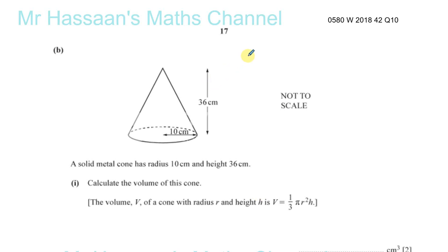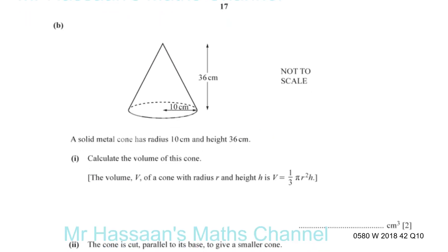This is question 10, part B from the Winter 2018 IGCSE exam, paper 4, variant 2. The question is about a solid metal cone with a radius of 10 centimeters and a height of 36 centimeters. We need to calculate the volume of the cone using the given formula: V = 1/3 × π × r² × h. We plug in the values using a calculator value for π, r² = 10², and h = 36.